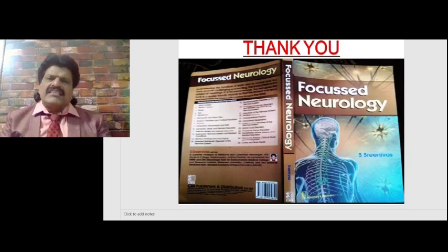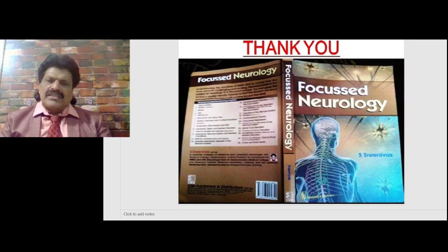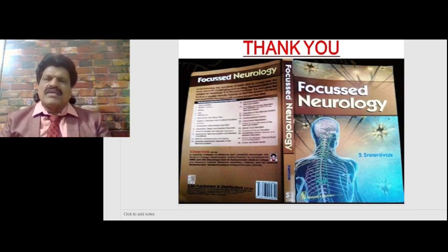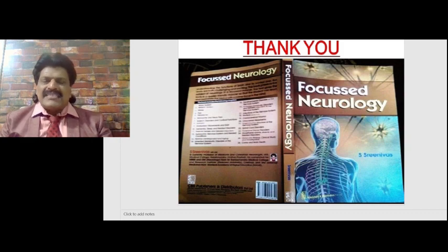These are the fascinating concepts of localization of Horner's syndrome. Other fascinating neurologic concepts are found in my book Focused Neurology, available online from all leading booksellers including Amazon. These cover the sympathetic pathway — first, second, and third order — and the localization of Horner's syndrome. If you enjoyed this lecture, please like and share the video with your friends, and please subscribe to my YouTube channel Dr. Srinivas Medical Concepts and my Facebook page Dr. Srinivas Concepts. Thank you, bye.